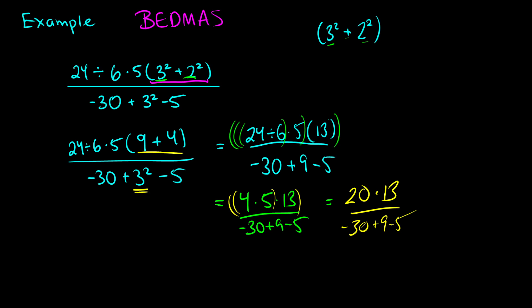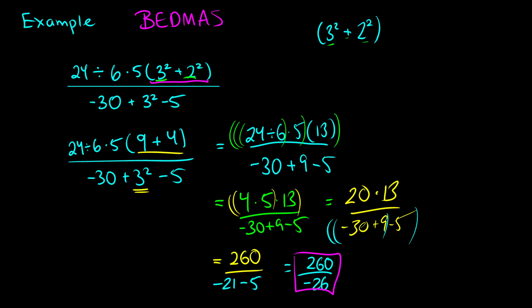20 times 13 on top gives us 260. On the bottom, we work left to right: negative 30 plus 9 is negative 21, and then minus 5 gives negative 26. So we have 260 over negative 26. Dividing 260 by negative 26 gives us a final result of negative 10. This complex expression evaluates to negative 10 using brackets, exponents, division, multiplication, addition, and subtraction.